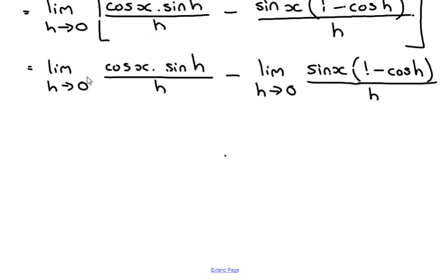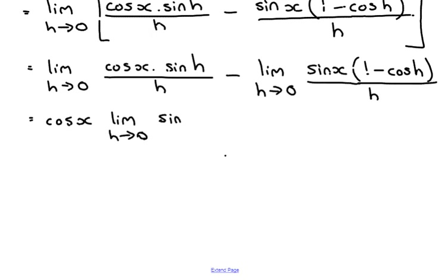The limit is with respect to h, so cos x and sin x are not influenced by it — we can take cos x out of the first limit and sin x out of the second. This gives us cos x times the limit as h tends towards zero of sine h over h, minus sin x times the limit as h tends towards zero of one minus cos h over h.